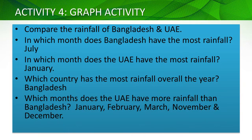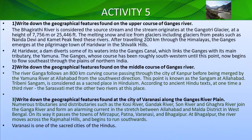Here you have the graph activity — you can see the graph in your textbook and there are various questions asked, so you can check out the answers. For Activity 5, also from your textbook, you can search for the right answers and add a few points of your own.